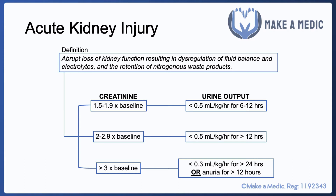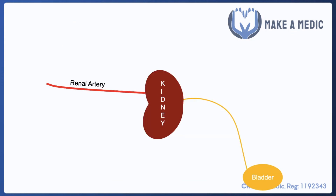AKI can also be described based on the extent of a patient's urine output. Normally you'd expect a healthy individual to produce at least 0.5 ml per kilogram per hour of urine — in other words, they should produce their body weight in millilitres every two hours. So urine output and creatinine can both be used to classify an AKI as either stage 1, 2 or 3.